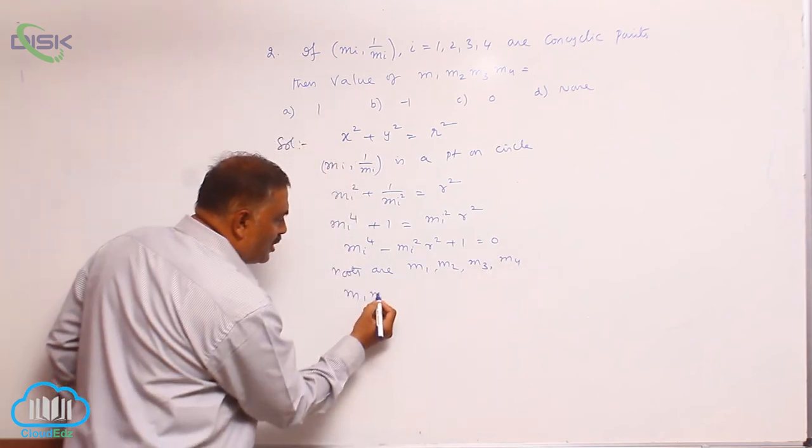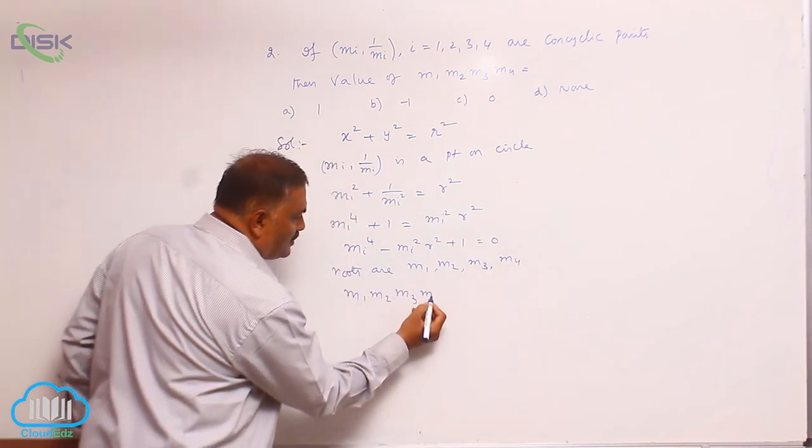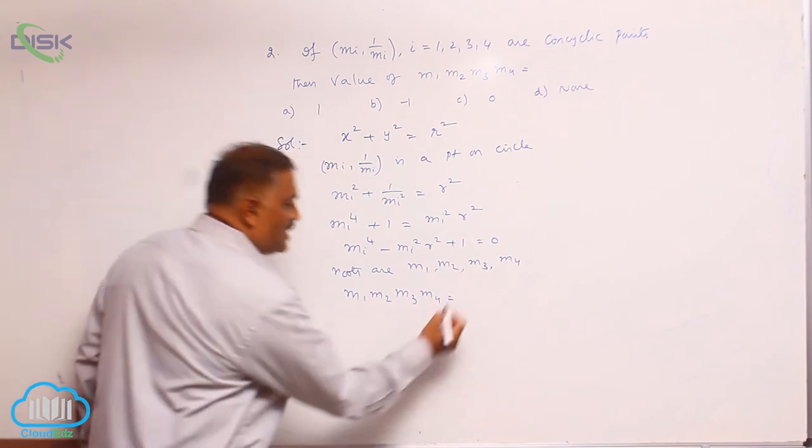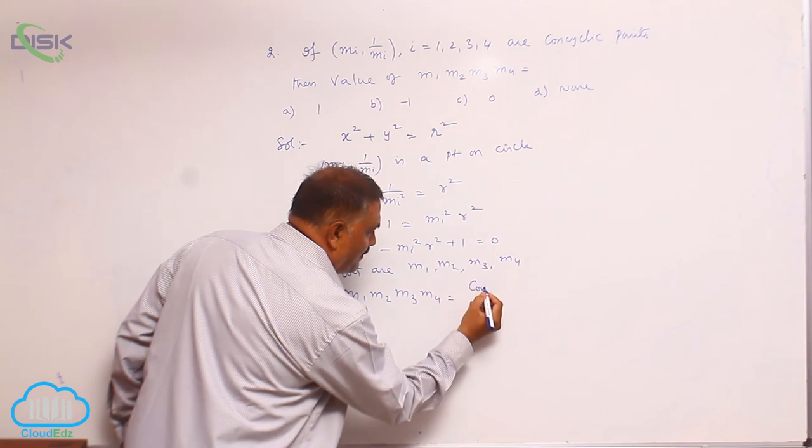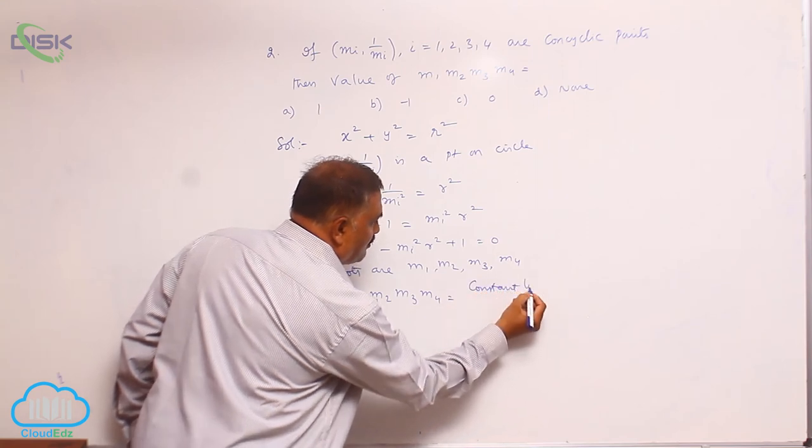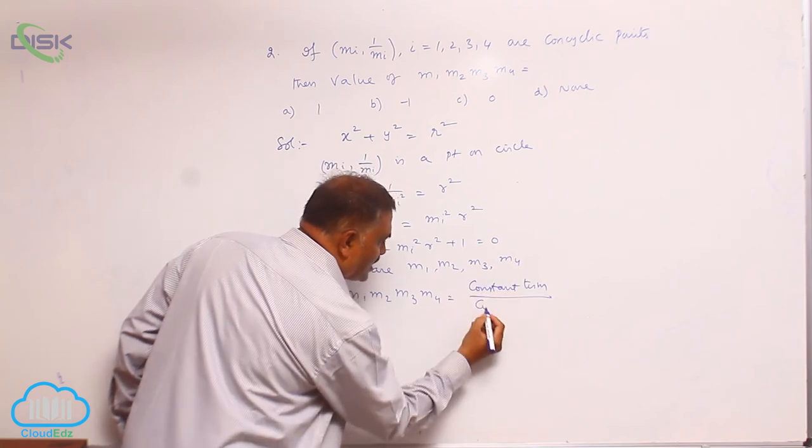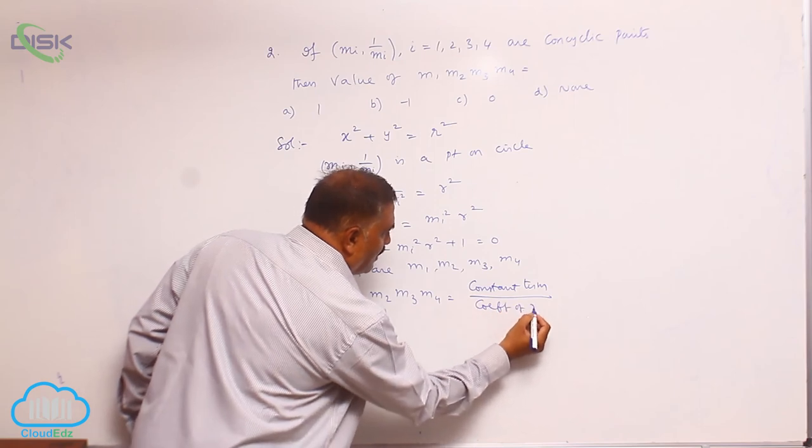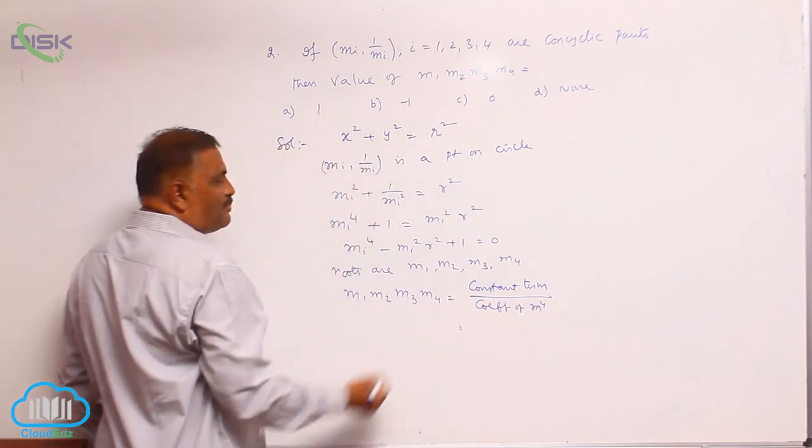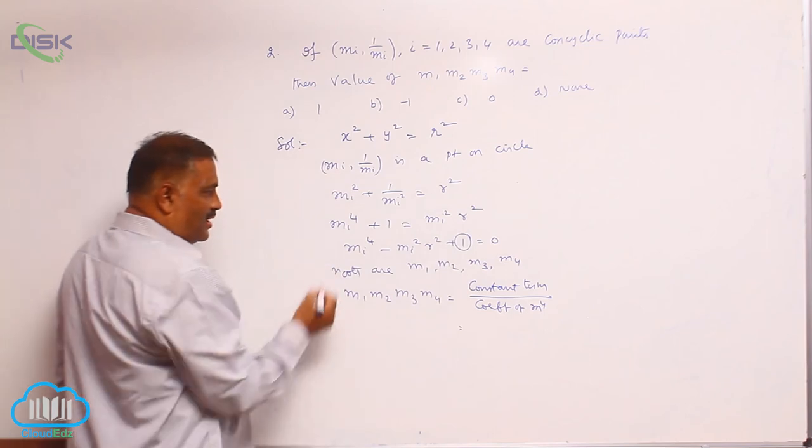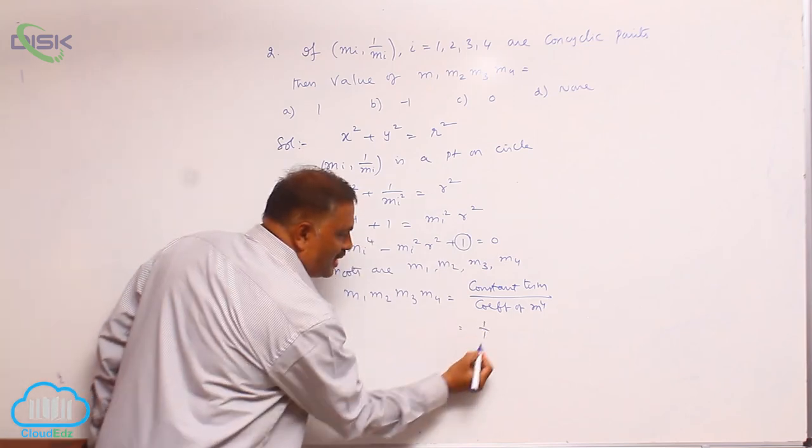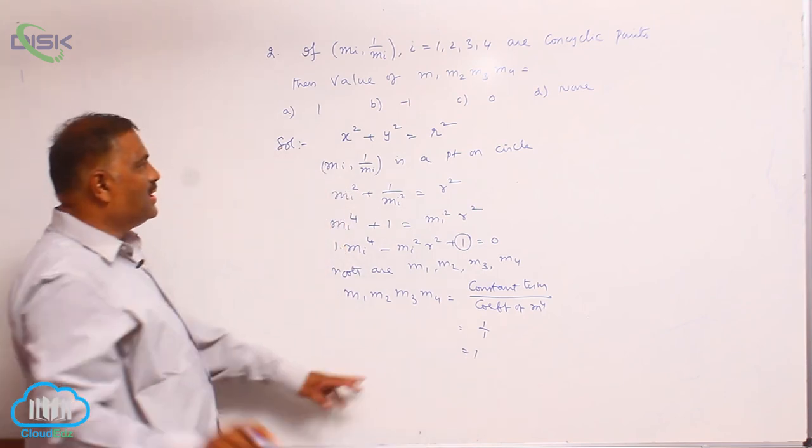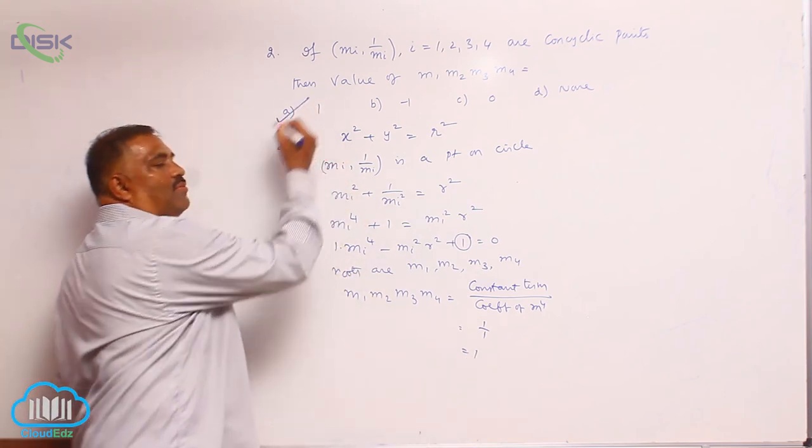Now we require the value of m1, m2, m3, m4. This is nothing but constant term divided by coefficient of m power 4. We observe that constant term is 1 here. mi power 4, m power 4 coefficient is 1. 1 by 1. The answer is 1. That is why the answer is 1 is correct.